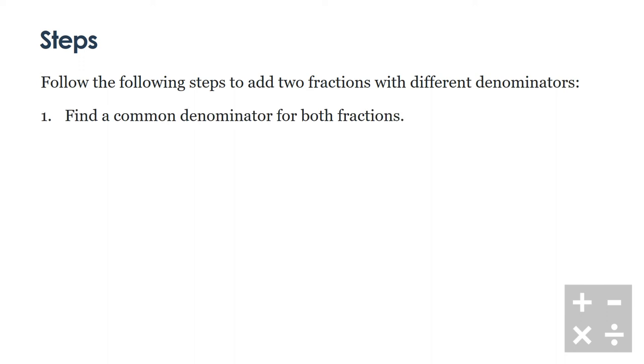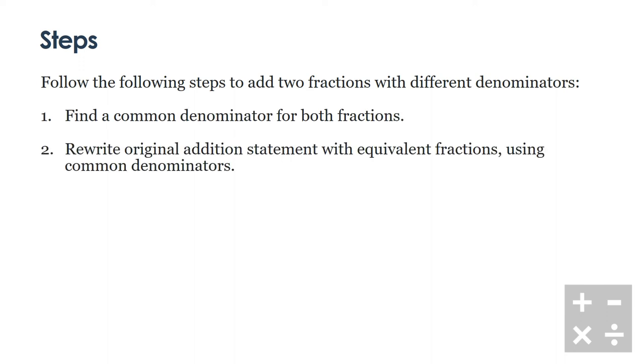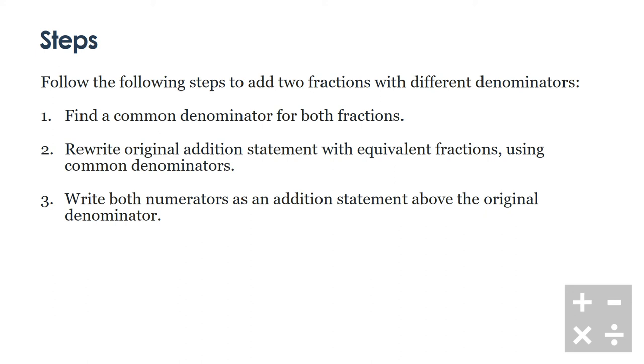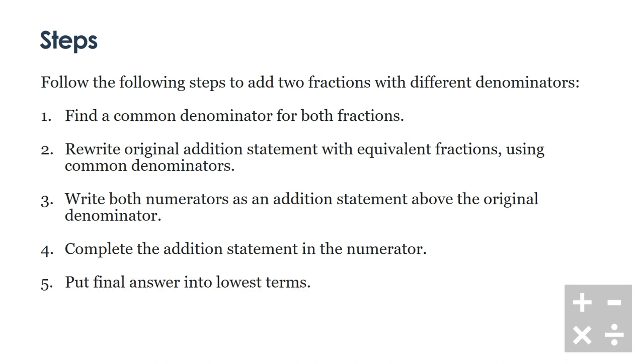Let's summarize the steps really quickly. Follow the following steps to add two fractions with different denominators. Find a common denominator for both fractions. Secondly, rewrite the original addition statement with the equivalent fractions using common denominators. Third, write both numerators as an addition statement above the original denominator. This is similar to the original addition that we've done before. And number four, we're going to complete the addition statement in the numerator. And last but not least, we're going to put our final answer into lowest terms.